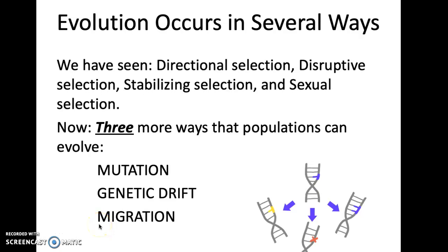This is another mini lecture on chapter 12 on other ways that populations can evolve. We've seen directional selection, disruptive selection, stabilizing, and sexual selection, and now we're going to look at mutation, genetic drift, and migration.